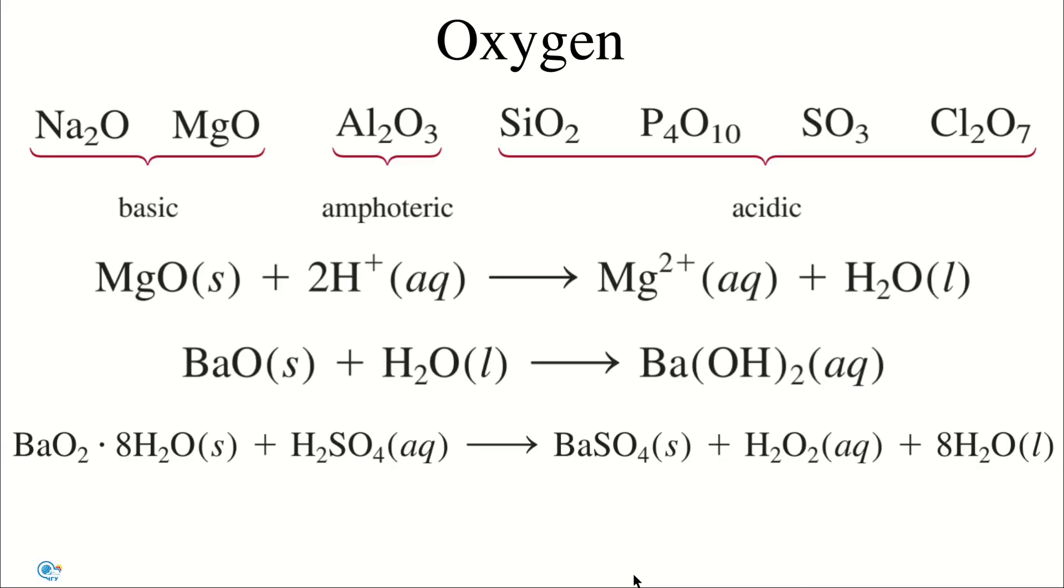The best known peroxide is hydrogen peroxide. It is a colorless syrupy liquid prepared in laboratory by the action of cold dilute sulfuric acid on barium peroxide octahydrate. Note that this is a disproportionation reaction. The oxidation number of oxygen changes from negative one to negative two and zero.